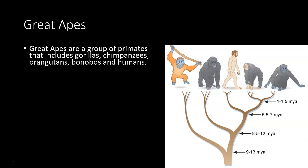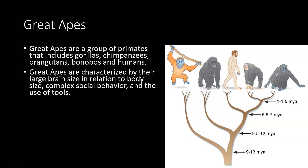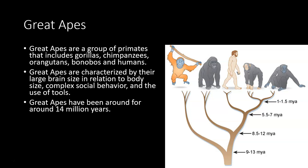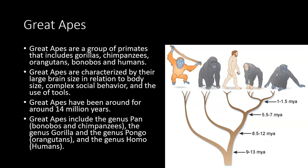So what are the great apes in general? We're a group of primates that includes gorillas, chimpanzees, humans, orangutans — they're interesting because they're on a totally different continent — bonobos, which are like chimpanzees but more chill, with matriarchal societies, and humans. Great apes are characterized by having large brain size, complex social behavior, and the use of tools. Scientists also confer personhood onto a lot of these animals when it comes to the ethics of using them for science. Great apes have been around for about 14 million years, and include the genus Pan — bonobos and chimpanzees — Gorilla, Pongo — the orangutans — and Homo, all the humans.